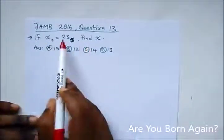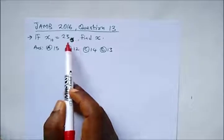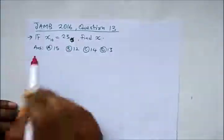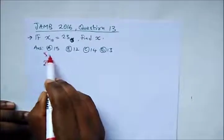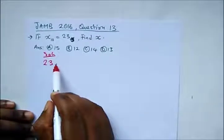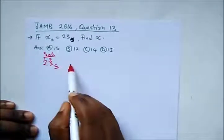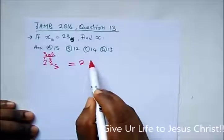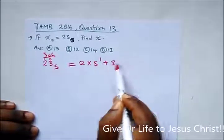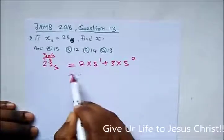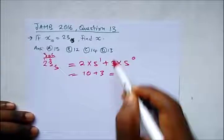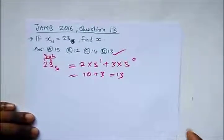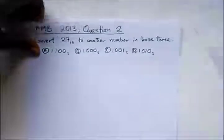What it's simply telling us here is to convert 23 base 5 to base 10. Remember, 23 base 5, this is position 0 and this is position 1. All we need to do is say 2 times 5 raised by 1 plus 3 times 5 raised by 0. This gives us 10 plus 3, which equals 13. This is our correct answer. This is an easy one.